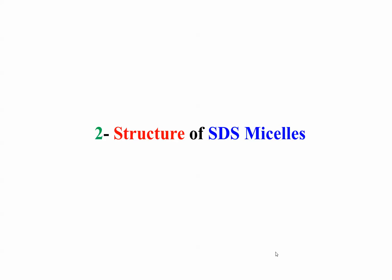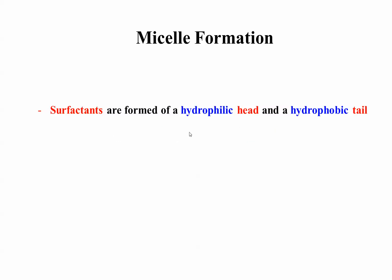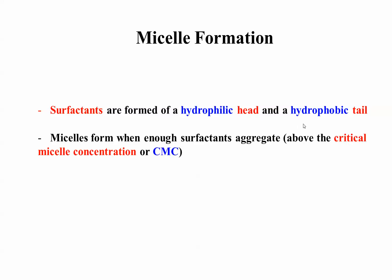Structure of STS micelles is second topic. Surfactants are formed hydrophilic head, it likes water, hydrophobic tail, doesn't like water. Micelles are formed with enough surfactant aggregates, above what is called critical micelle concentration. So, in other words, you have water, start adding some surfactant like STS. At certain STS fraction micelles form. Beyond that, most of the STS goes to form the micelle, but a certain small fraction remains dissolved. It remains dissolved at the CMC fraction, CMC concentration.